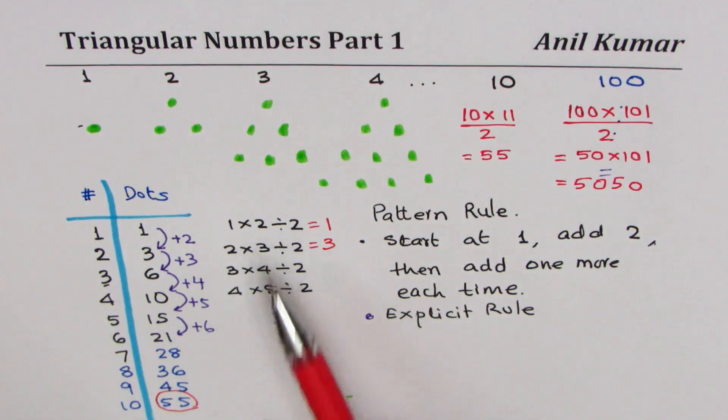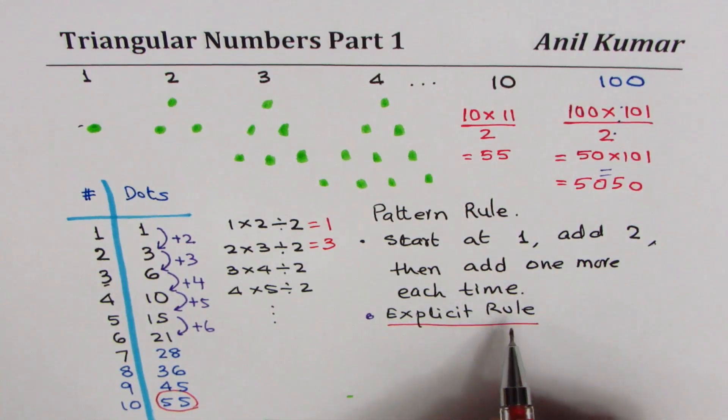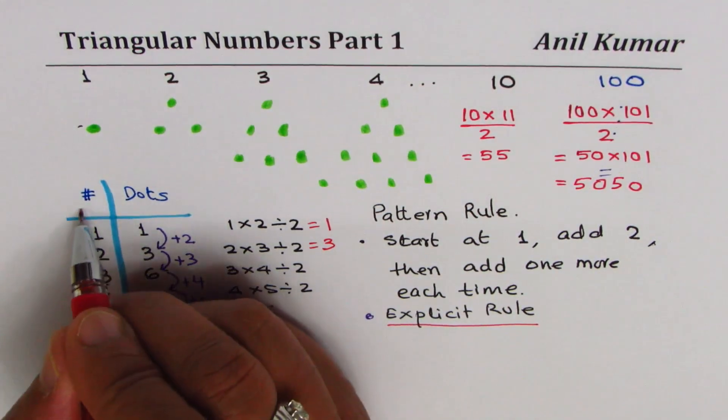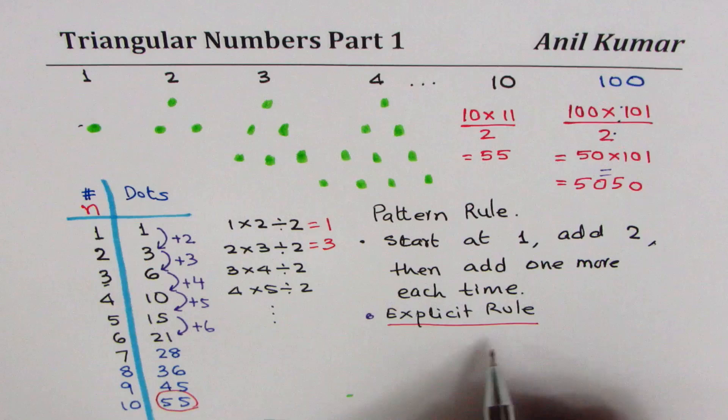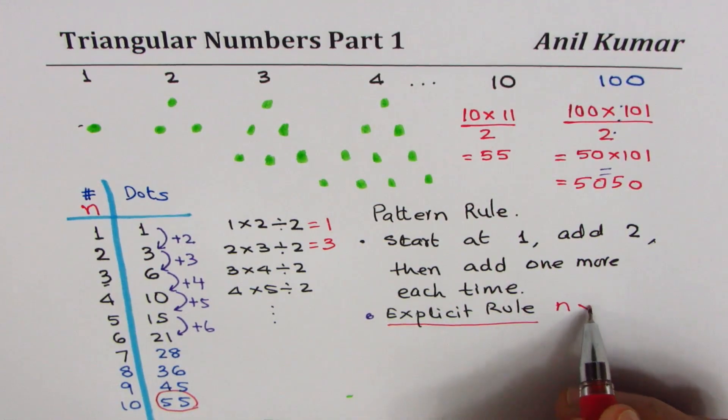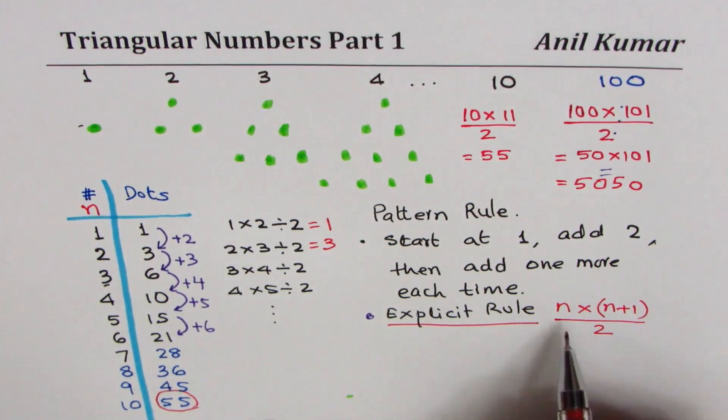So that is how you can apply a rule and this kind of rule is called explicit rule. So if the number is n, then we say explicit rule here is n times n plus one, divide by two. If you have two numbers like this, one after the other,